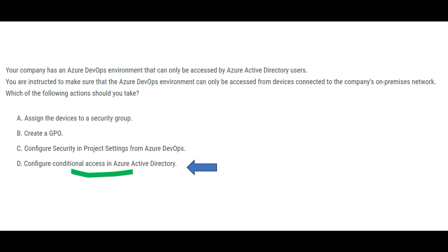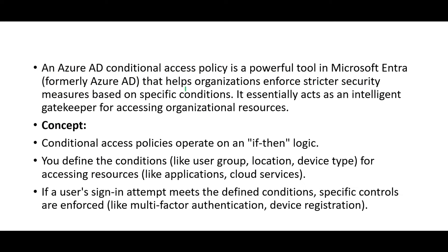Configure conditional access in Azure Active Directory. Conditional access is a very powerful tool — it acts as an intelligent gatekeeper outside your airport, not inside. As a concept, conditional access policies operate on an if-then logic: you define conditions like user group, location, device type, etc. You can say if the device type is connected to the on-premises network, then only allow it. If a sign-in attempt meets the defined conditions, access will be provided.